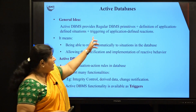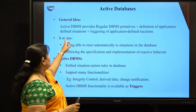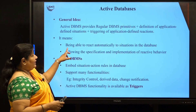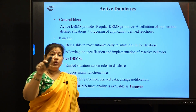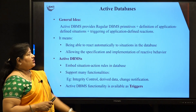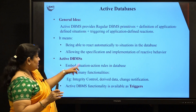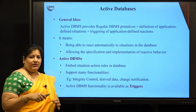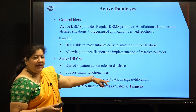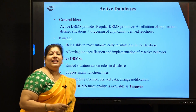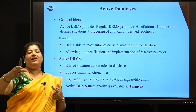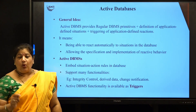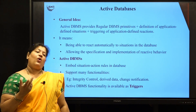The general idea is that along with your regular DBMS primitives, you also have a definition of application-defined situations plus the triggering of application-defined solutions. This is the ECA model — it is able to react automatically to situations in the database, allowing specification and implementation of reactive behaviour. You embed the situation and action rules into the database. An event will automatically trigger the action. That is why we say active database functionality is available as triggers, and those databases in which triggers are present are called active databases.